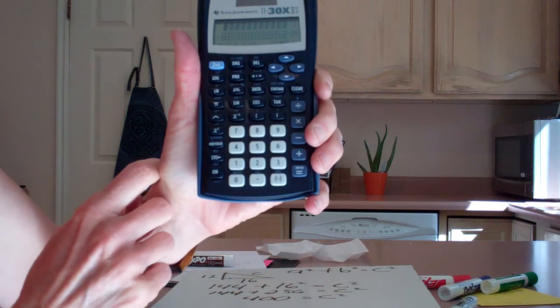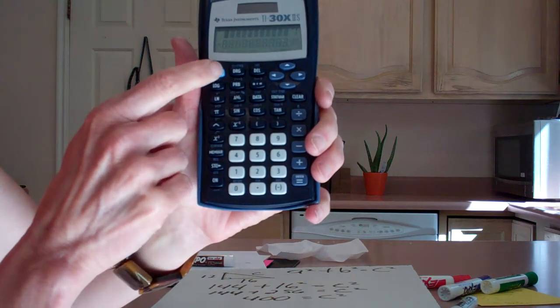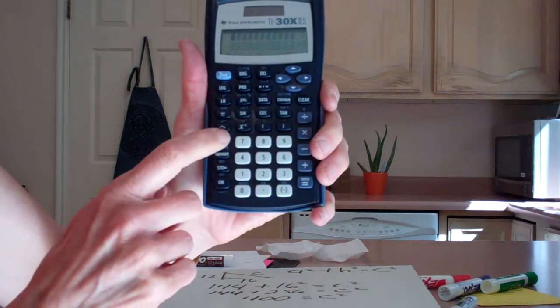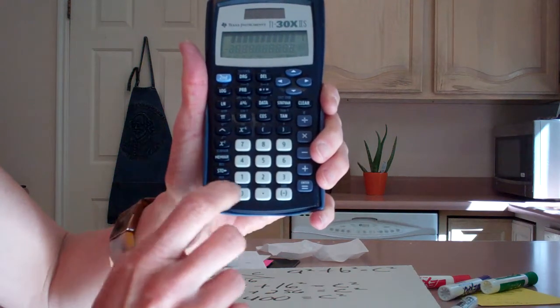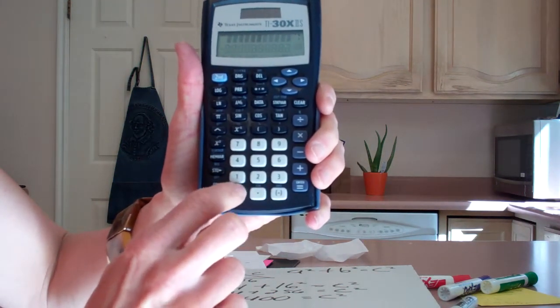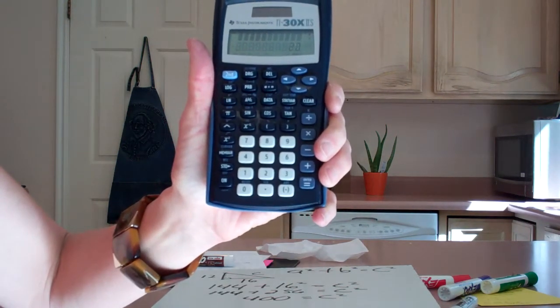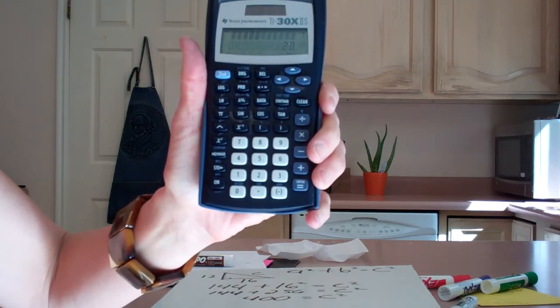So I want the square root of 400. I'm going to punch second, X squared—because above that is square root—400, equals. Well, it says the square root of 400 is 20.